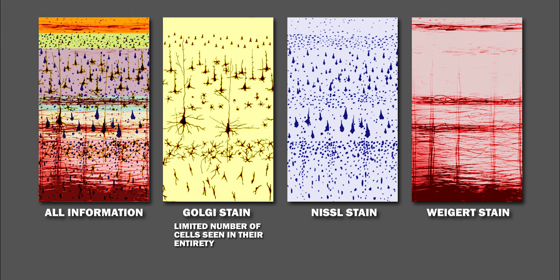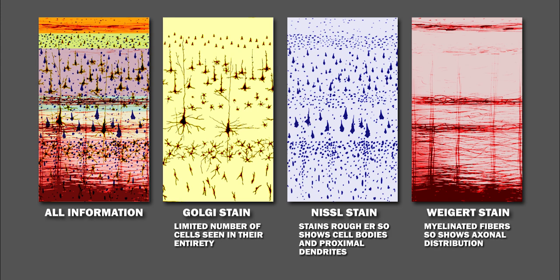The Nissel stain stains ribosomal RNA on the rough endoplasmic reticulum dark blue, and hence shows cell bodies and proximal dendrites. The Weigert stain shows myelinated fibers and hence axonal distribution.